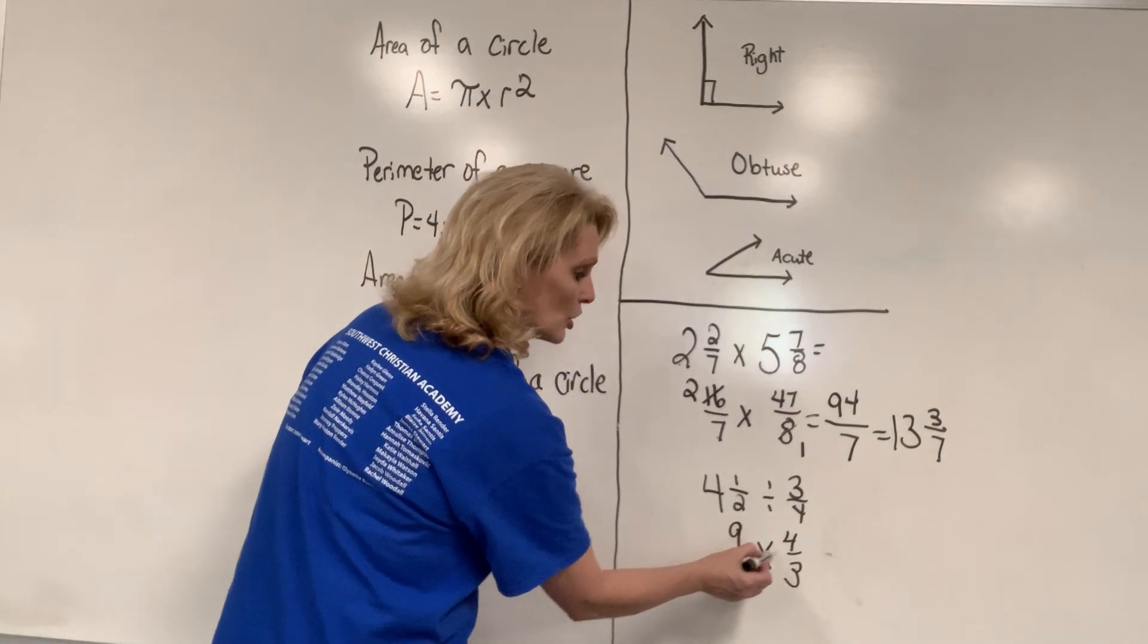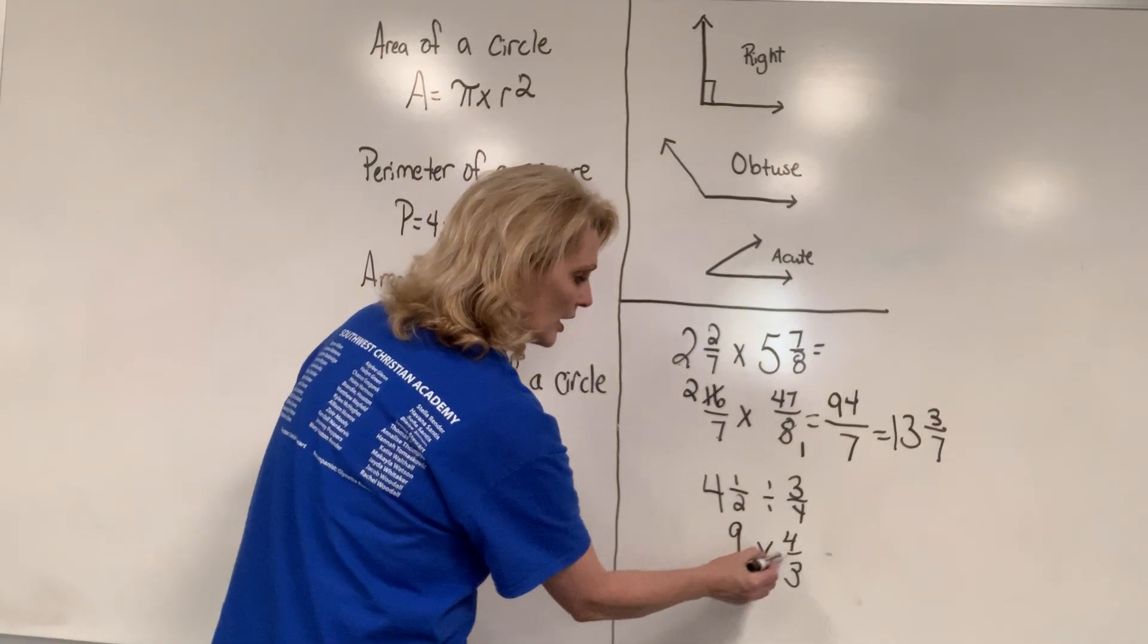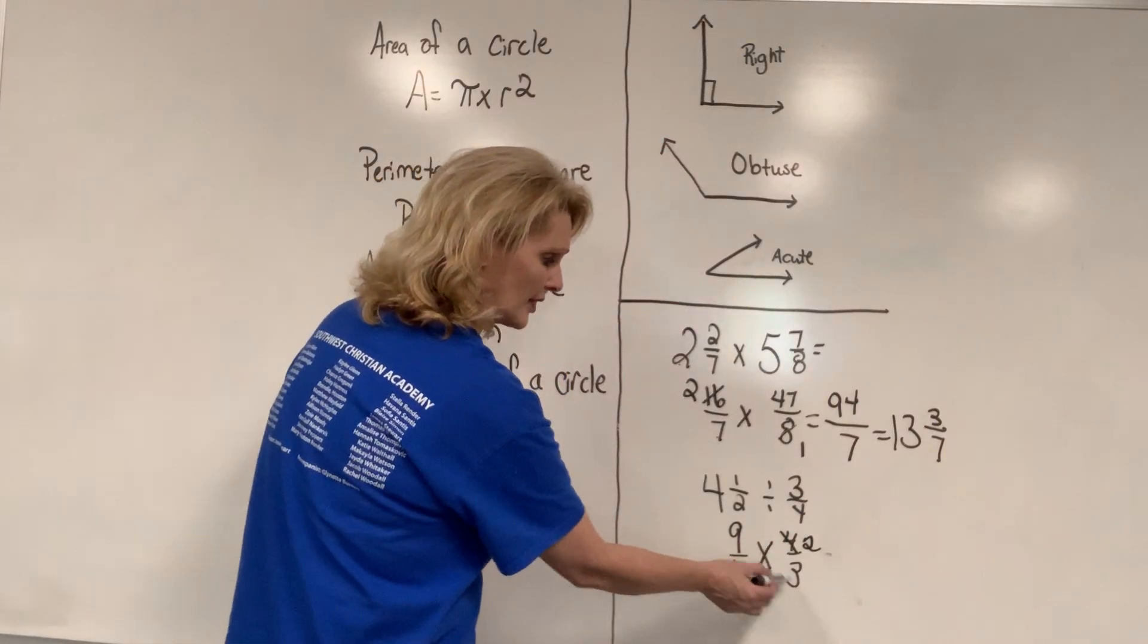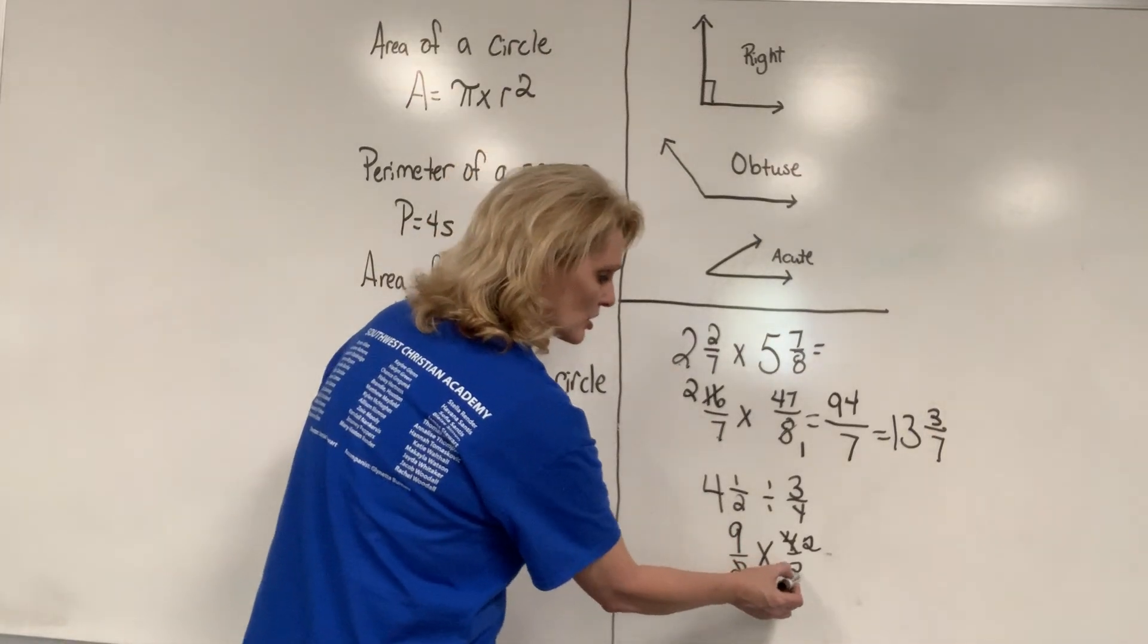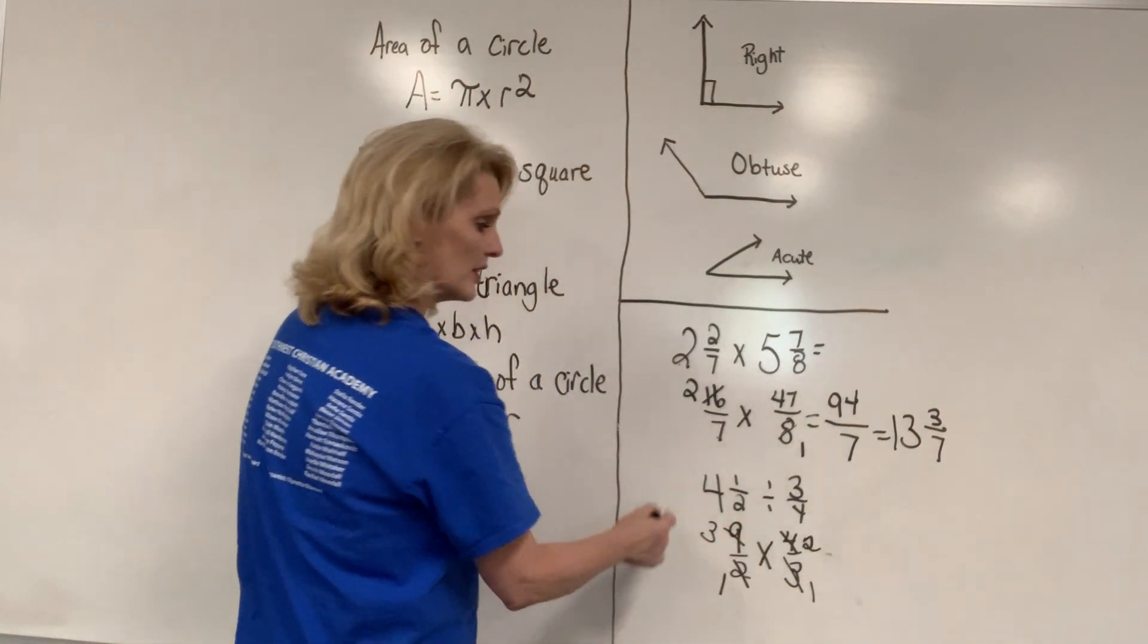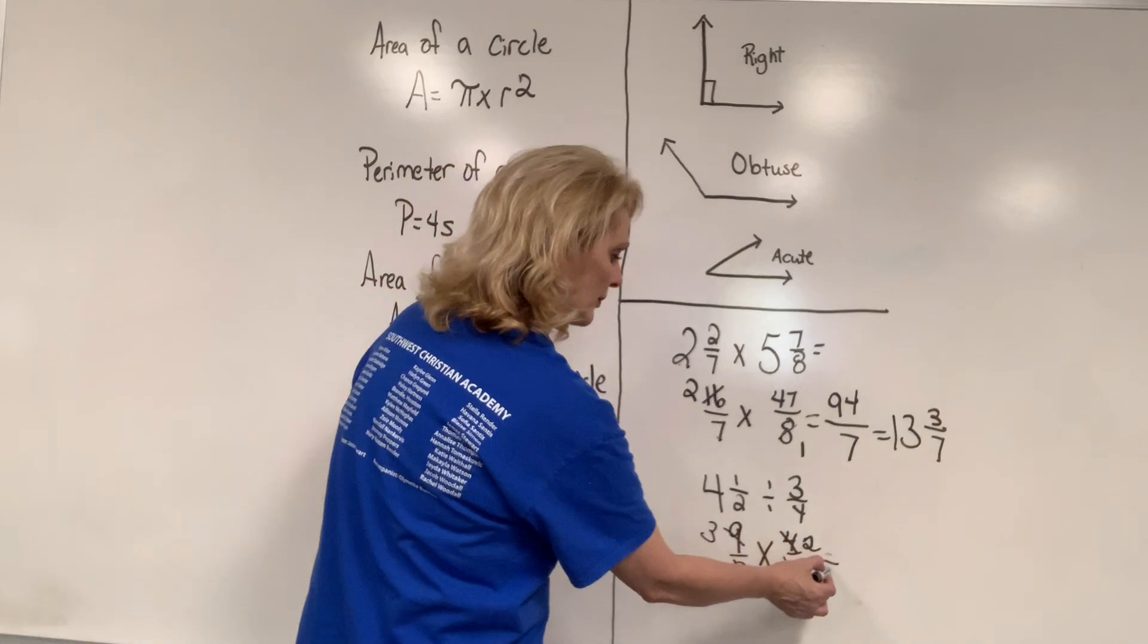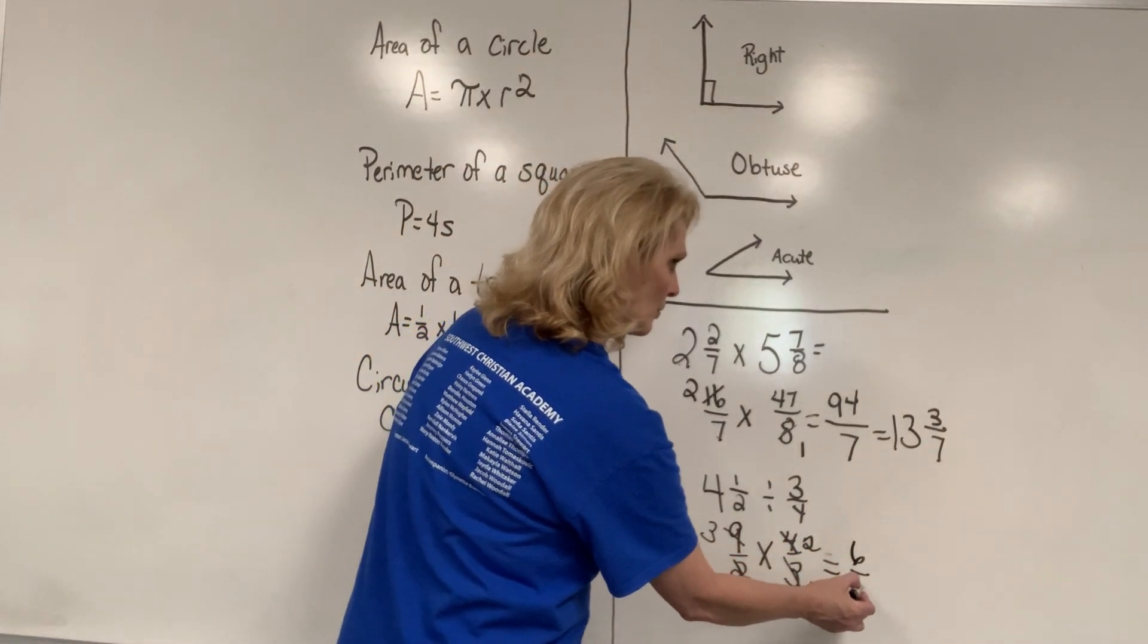So you have, can 2 go into 4? Yes. 2 will go into 2, 1 time. 2 will go into 4, 2 times. Same thing here. Can 9 and 3 cancel out? Yes. 3 will go into 3, 1 time. 3 will go into 9, 3 times. Then you just multiply across. 3 times 2 is 6 over 1.